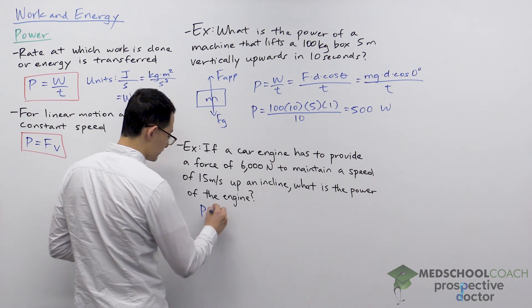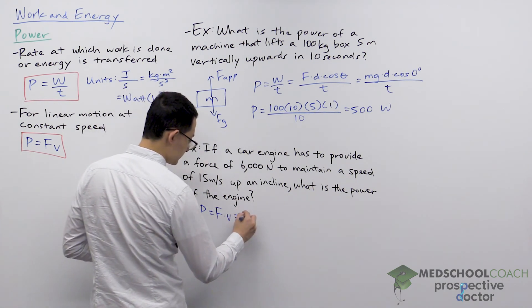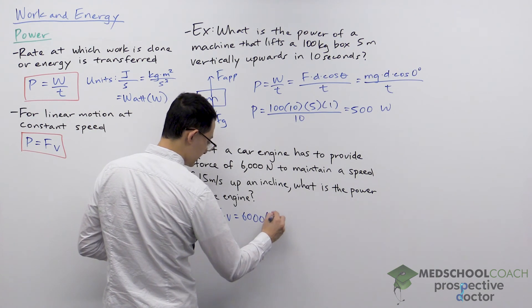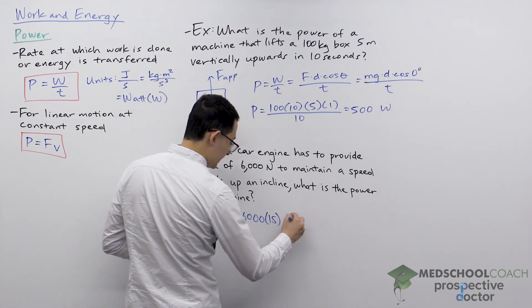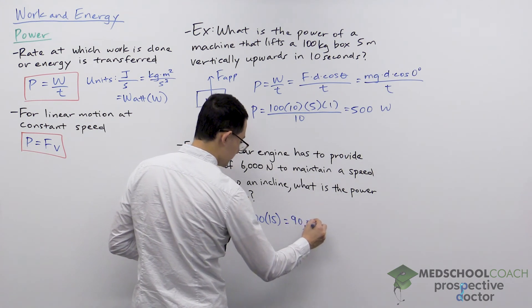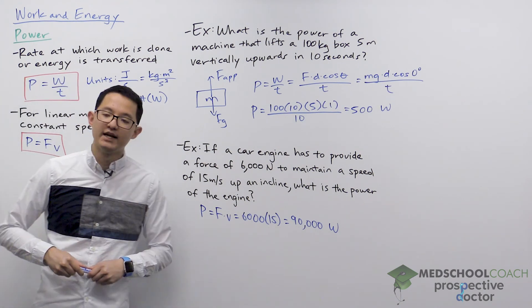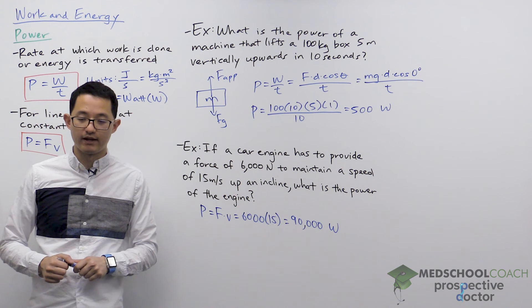Power is equal to force times velocity. The force here is 6,000 newtons. The velocity is 15 meters per second. So this is going to give us an answer of 90,000 watts. So very large power that the car must supply in order to maintain this speed while going up the incline.